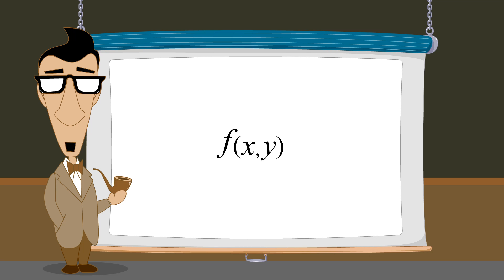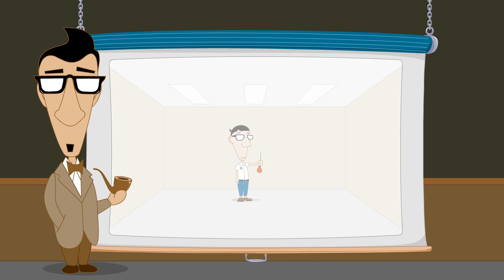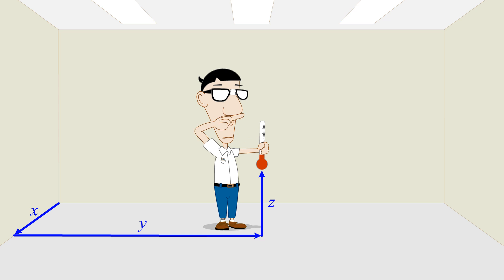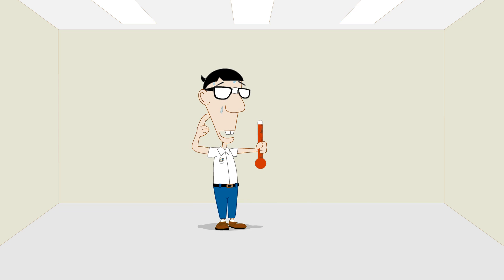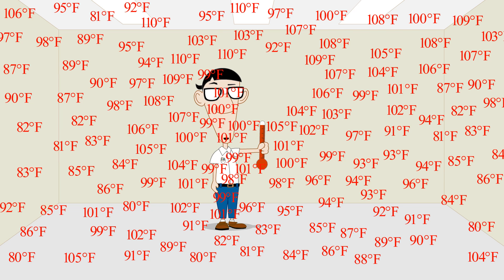Multivariable functions need not be limited to two input variables. Functions of three variables are often encountered in physics and engineering. For example, the air temperature at every point in a room could be represented by a function of three variables. The three independent variables x, y, and z could locate a spatial position in the room, and the value of the function could represent the air temperature at that position. Although it would be difficult to visualize this function using a graph, we can imagine every position in the room containing a number which represents the temperature at that point in space.